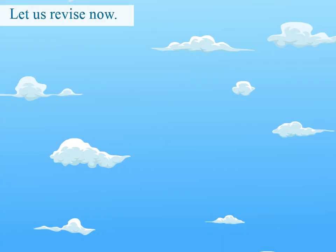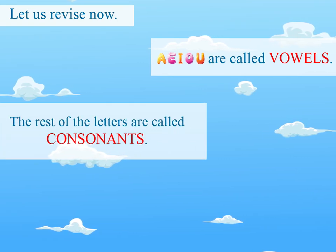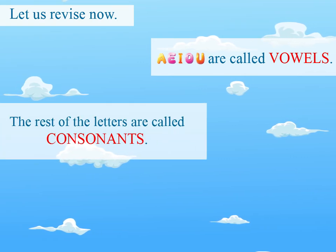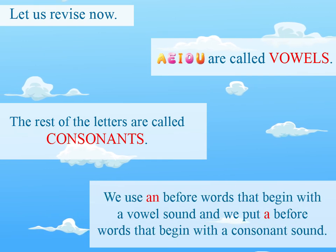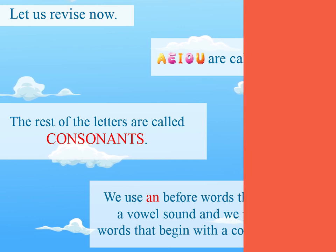Let us revise now. A, E, I, O, U are called vowels. The rest of the letters are called consonants. We use AN before words that begin with a vowel sound, and we put A before words that begin with a consonant sound. Thank you.